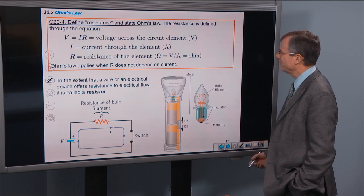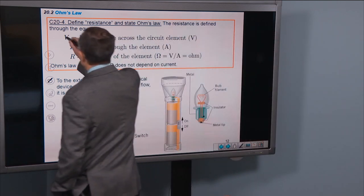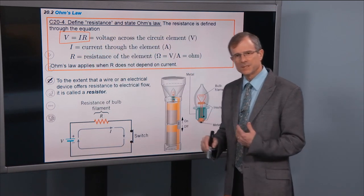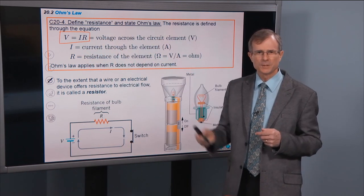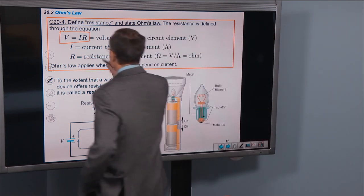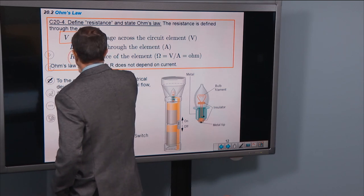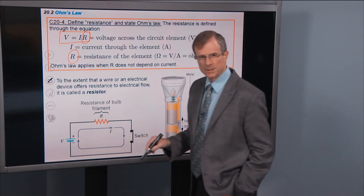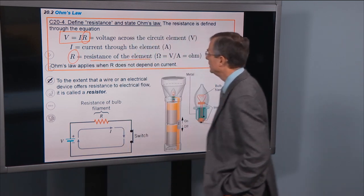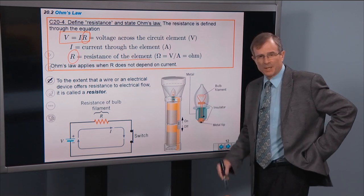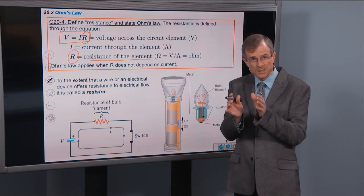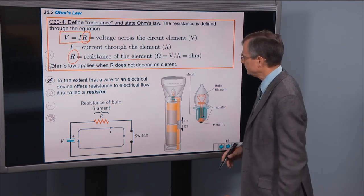So we're going to define resistance and state Ohm's Law. The resistance is defined through this equation. So this is just a definition of resistance, and you say, well that's weird that you're going to define resistance in an equation where it's not R equals something, but it's R embedded in the equation, but it still defines R. So R here that appears in this equation is the resistance of the circuit element.